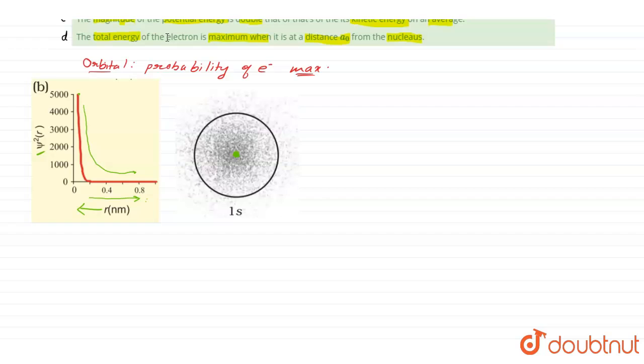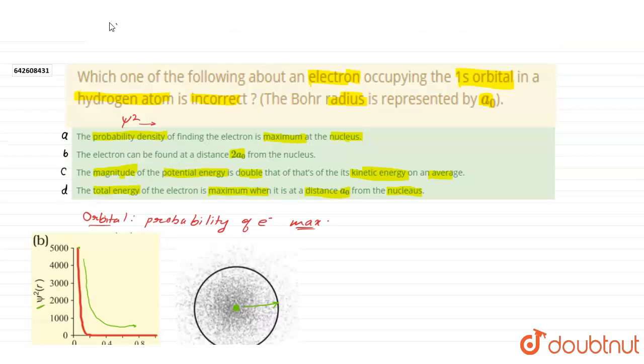So, electron cloud is denser around nucleus, and as we go towards circumference, the density of electron clouds is decreased. It means, we can say the probability density of finding the electron maximum at the nucleus, it is correct.